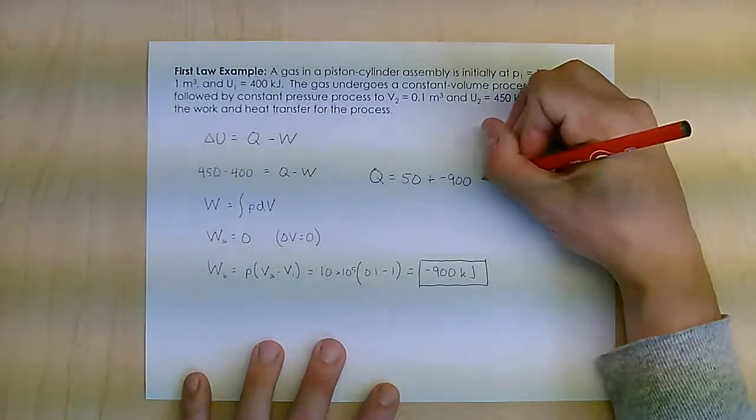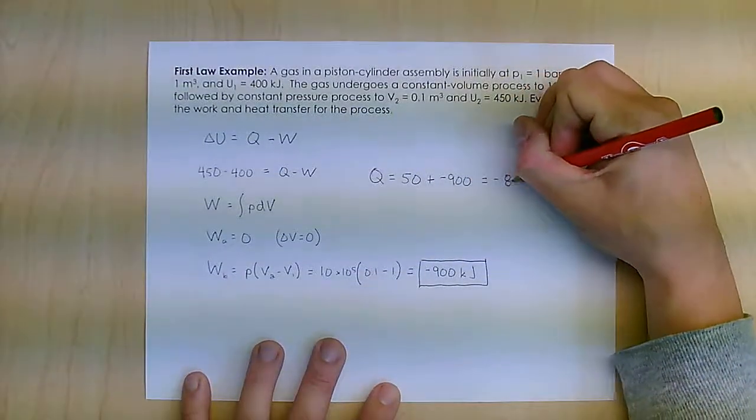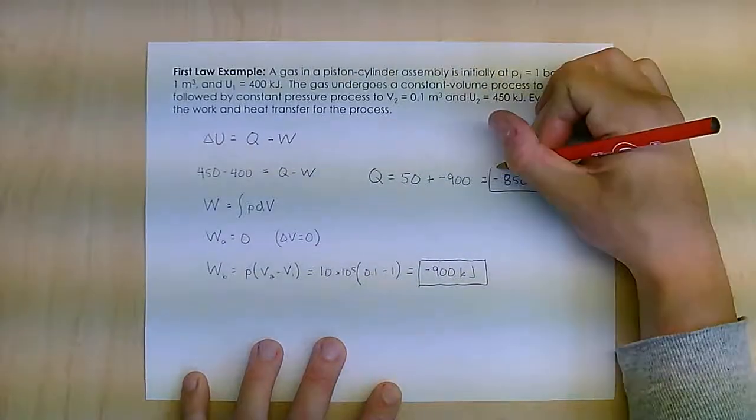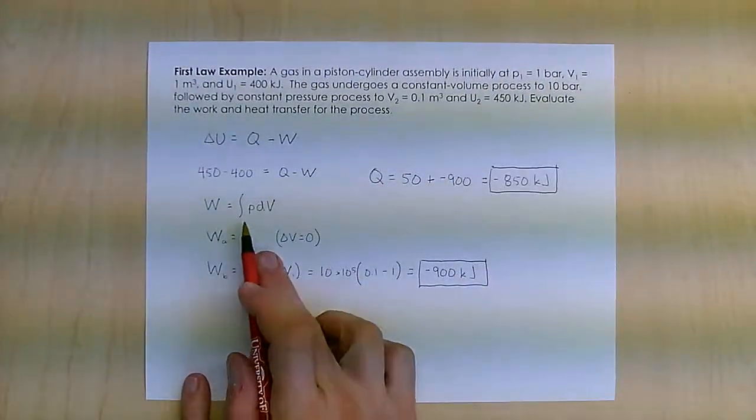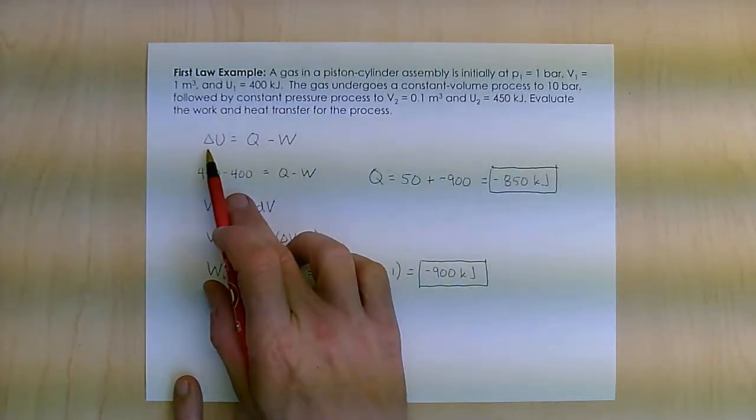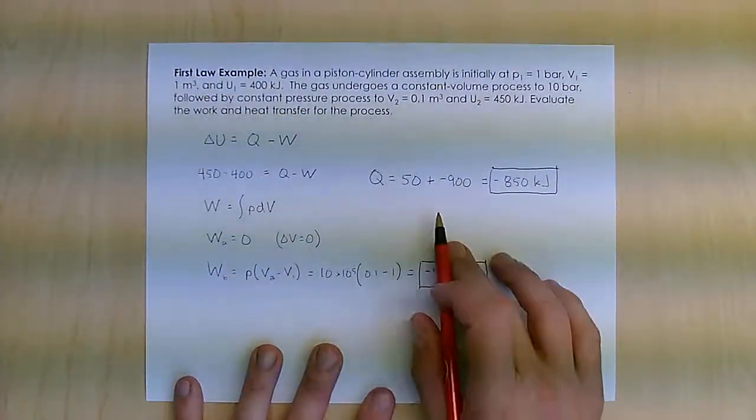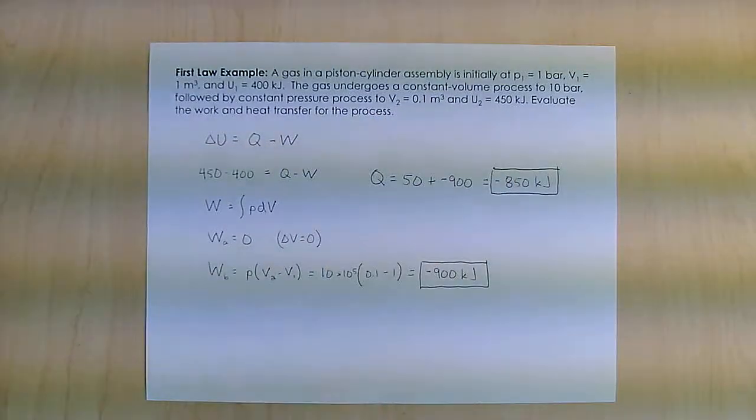My heat transfer is negative 850 kilojoules. That's how I use both my definition of work, which is PdV, and my first law equation, which is the change in energy equals heat minus work, to figure out the work and heat transfer for this system.